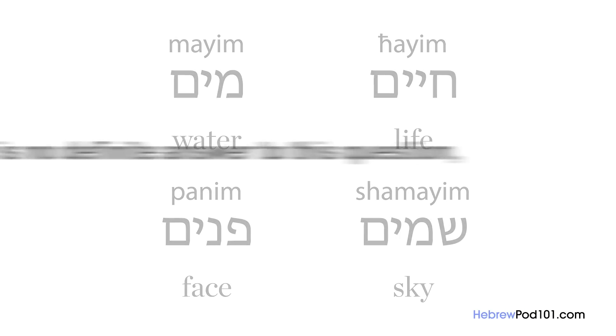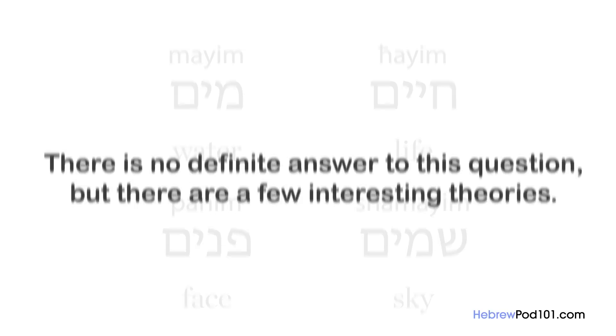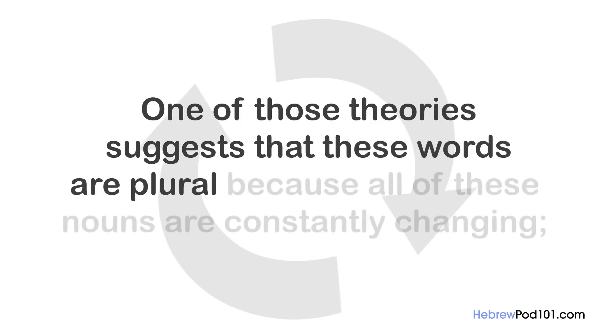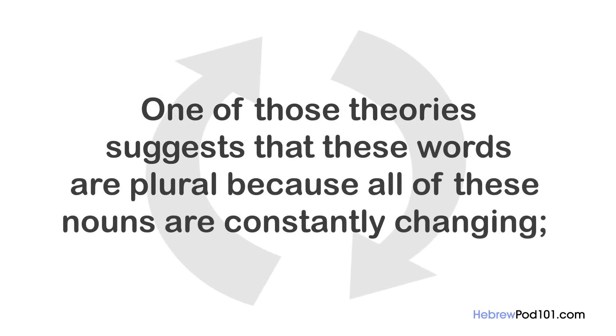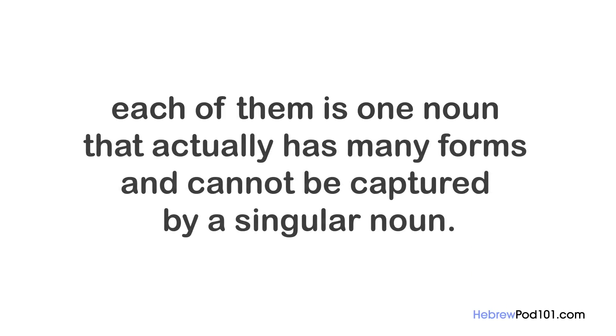Why are these words plural? There is no definite answer, but one theory suggests these words are plural because all of these nouns are constantly changing — each is one noun that actually has many forms and cannot be captured by a singular noun. How was this lesson? Pretty interesting, right? Do you have any more questions? Leave them in the comments below and I'll try to answer them.